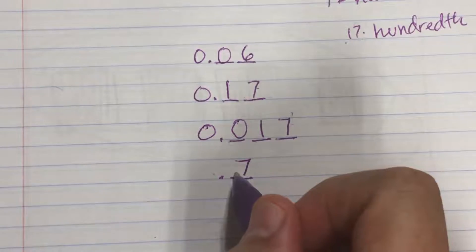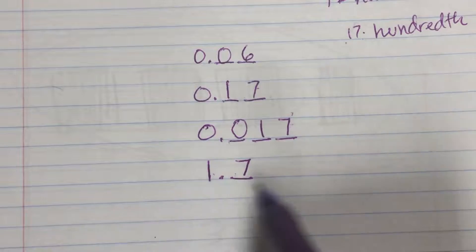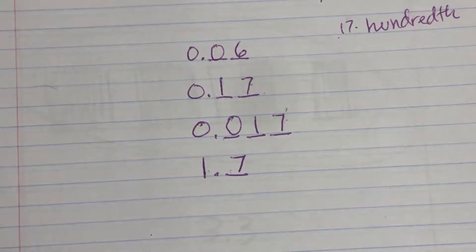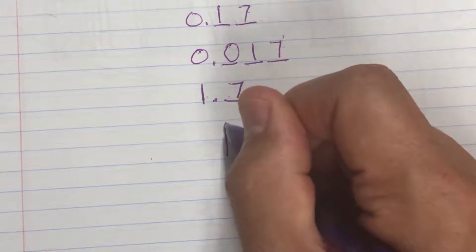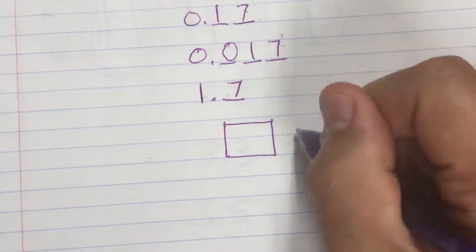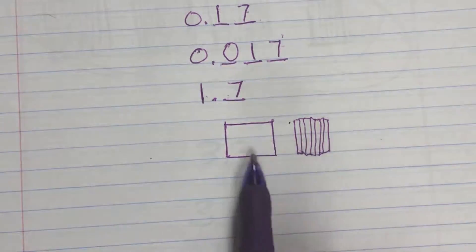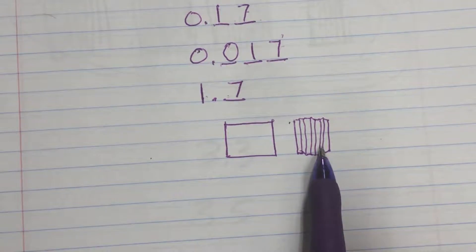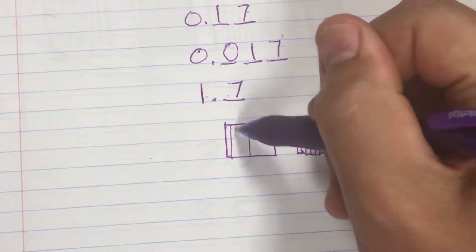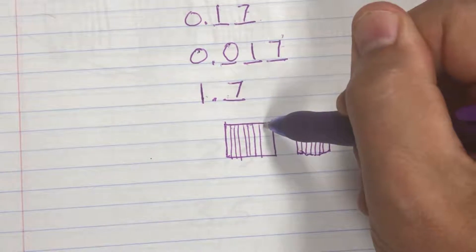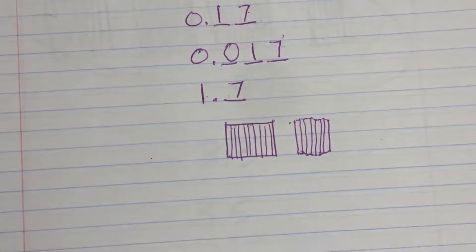That means the one would have to go in the ones place. So seventeen tenths is actually equal to one and seven tenths. This makes sense because one whole equals ten tenths, so altogether we would have seventeen tenths.